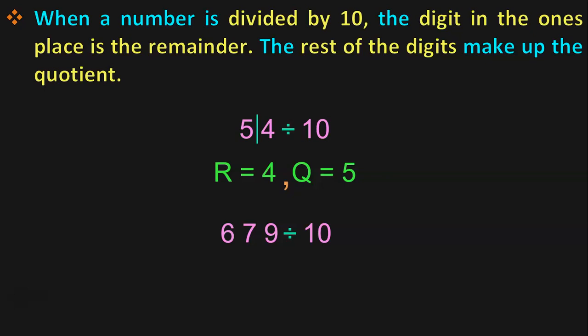When you divide by 10, you will have to draw a line after the 1's place, which means the digit in the 1's place is the remainder. Here, the remainder is 9 and the quotient is 67.